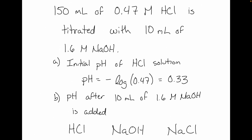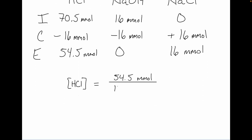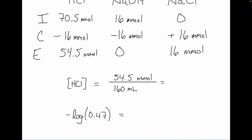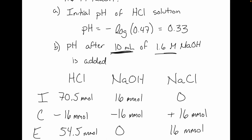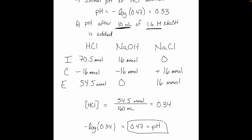My new volume is 160 milliliters — the 150 mL I started with plus my 10 mL. So concentration of HCl is 54.5 divided by 160. Taking the negative log of that concentration gives my pH = 0.47. We'll finish up titrations on Monday.